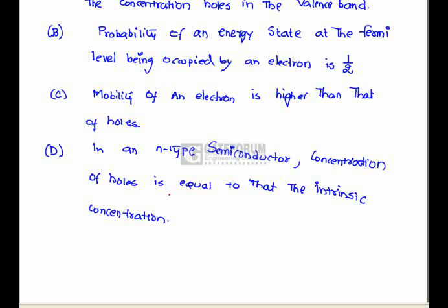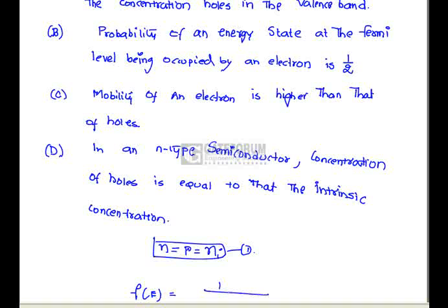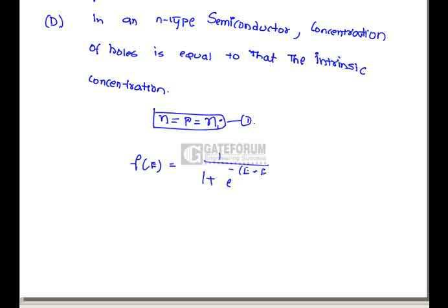The question is which one of the following statements is not true. If we consider the statement a, an intrinsic semiconductor the concentration of electrons in the conduction band is same as the concentration of holes in the valency band. Yeah that's true because in case of an intrinsic semiconductor number of electrons equals to the number of holes equals to the intrinsic carrier concentration that is represented by the equation 1. If we goes to the statement b, the probability of energy state at the Fermi level being occupied by an electron is 1 by 2. Yes, if we consider the Fermi Dirac fraction that is 1 by 1 plus exponential minus E minus EF by kT. If we substitute E equals to EF then we will get F of E equals to 1 by 2. Hence statement b is also true.